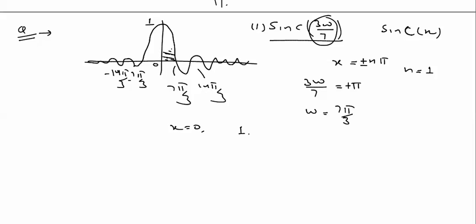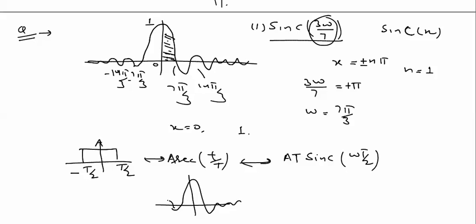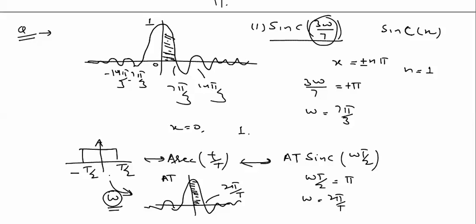The first zero crossing defines the bandwidth of the signal. For a rectangular pulse from −T/2 to T/2, the Fourier transform gives a sinc function: AT·sinc(ωT/2). The peak value is AT, and the first zero crossing is at 2π/T, which directly gives the bandwidth of the rectangular pulse.